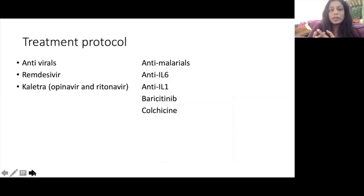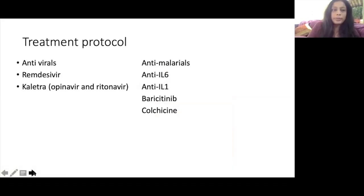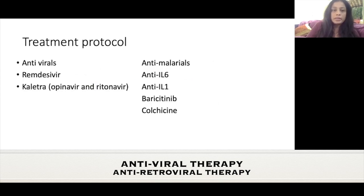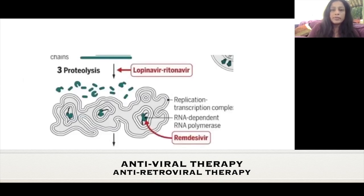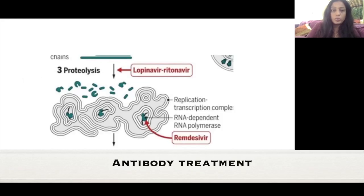In the treatment protocol, early stages use antivirals and possibly anti-malarials. In the later cytokine storm stage, we use anti-interleukin-6, anti-IL-1, baricitinib (a JAK-1 inhibitor), and sometimes colchicine. Antivirals targeting proteolysis include the lopinavir/ritonavir combination (Kaletra) and remdesivir, which works on RNA-dependent RNA polymerase. Remdesivir is now in clinical trials and being used widely, though we still don't know conclusively if these drugs are effective.